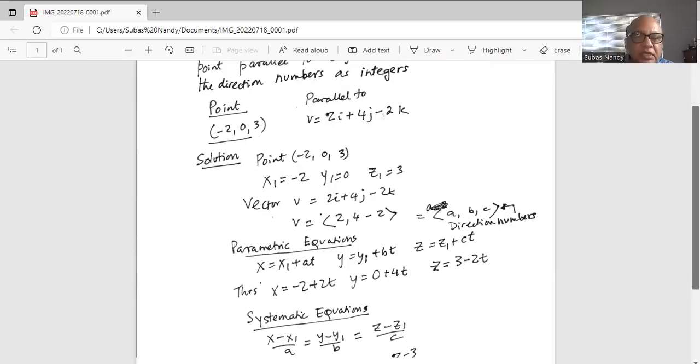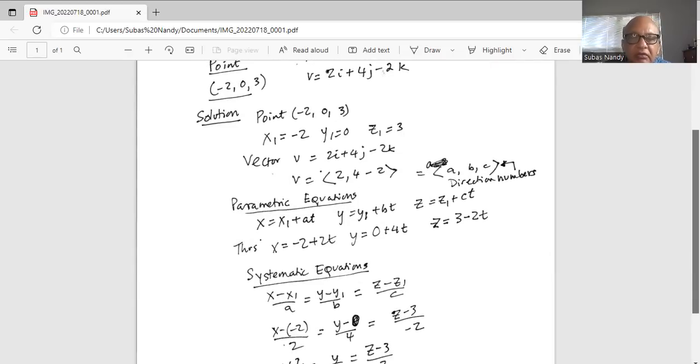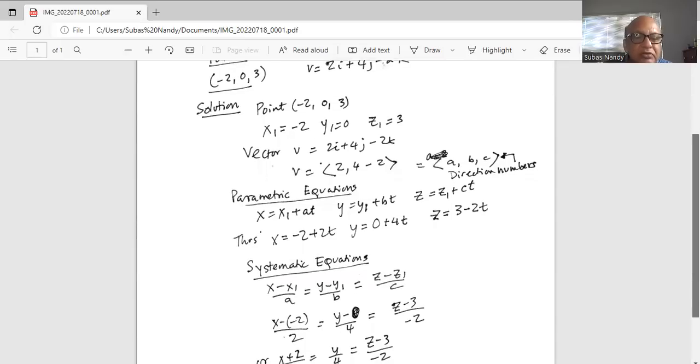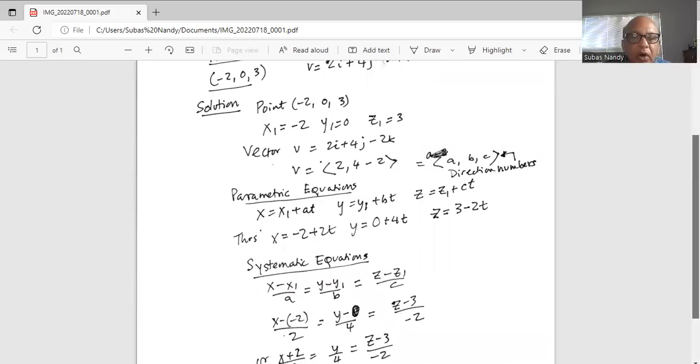So the symmetric equations are x minus x1 divided by a, y minus y1 divided by b, and z minus z1 divided by c. All three are equal, being equal to t. And x minus x1 is minus two. So x minus minus two divided by a which is two. And y minus y1, y1 is zero. So y minus zero divided by b which is four. And z minus z1 which is three, z minus three divided by c which is minus two.